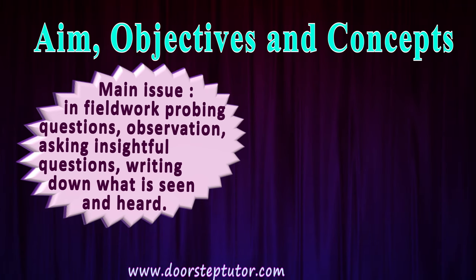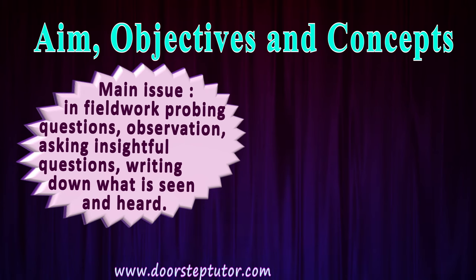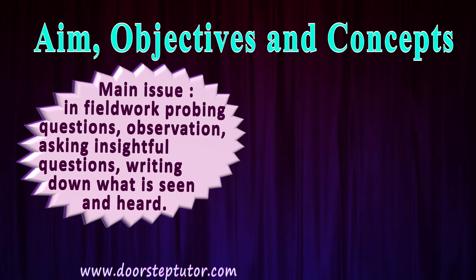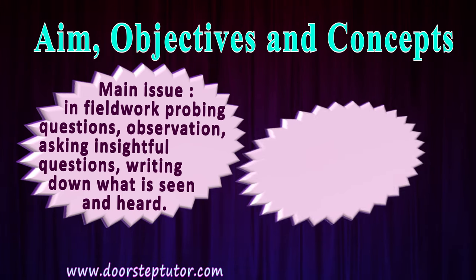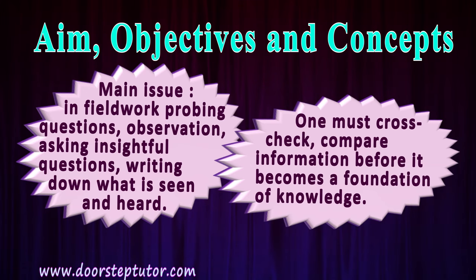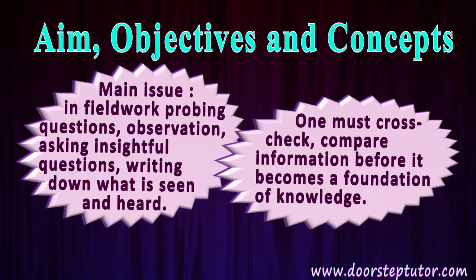The main issues in ethnography are probing questions, observation, asking insightful questions, and writing down what is seen and heard. Because the society on which field work is being done might be different from the observation as its reality exists. In ethnographic work, one must cross-check and compare information before it becomes a foundation of knowledge, making clear what the researcher has observed versus what is the reality on the ground.